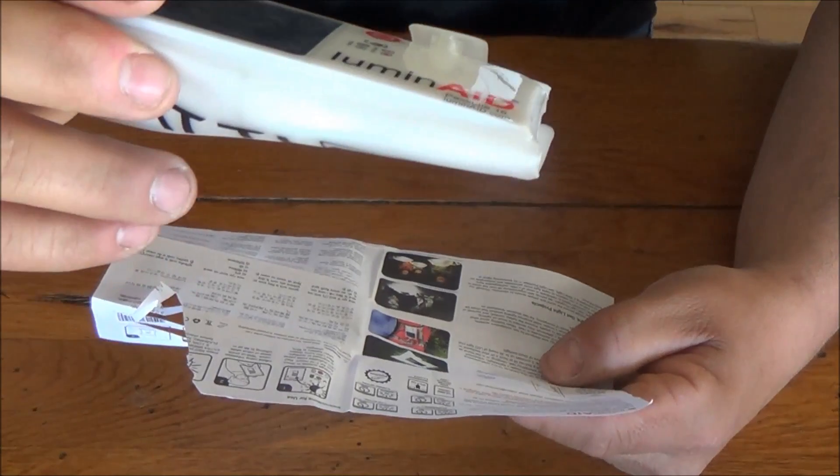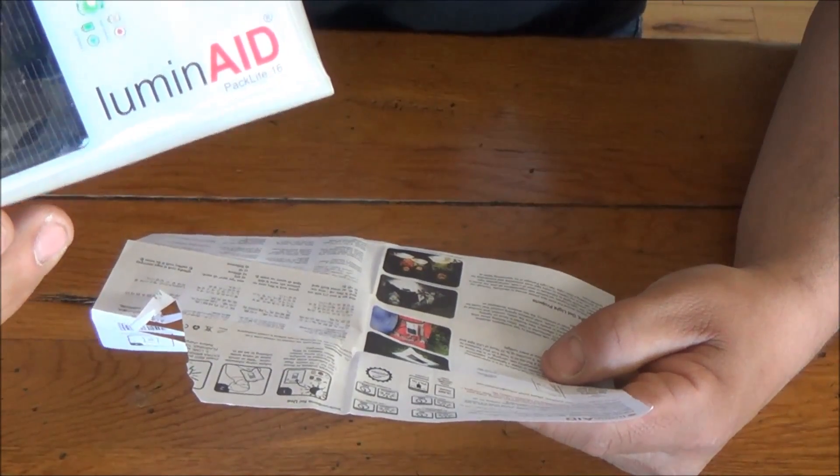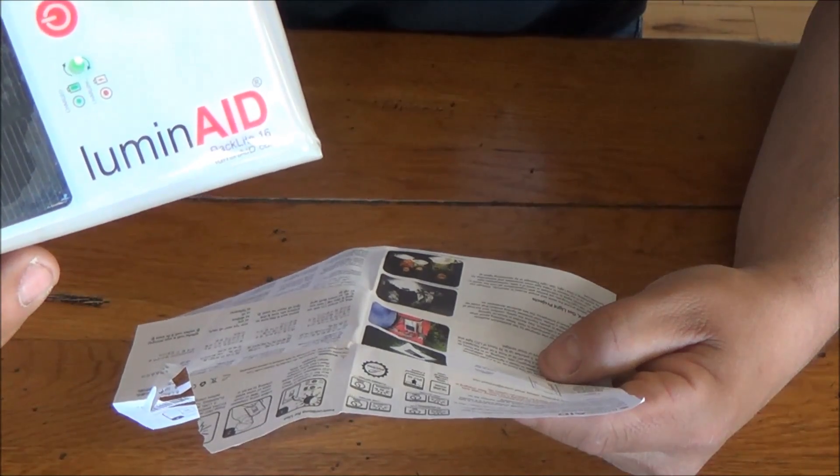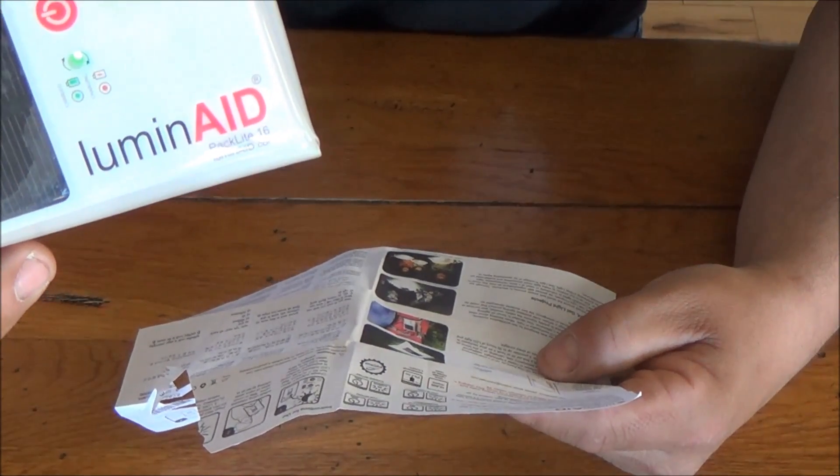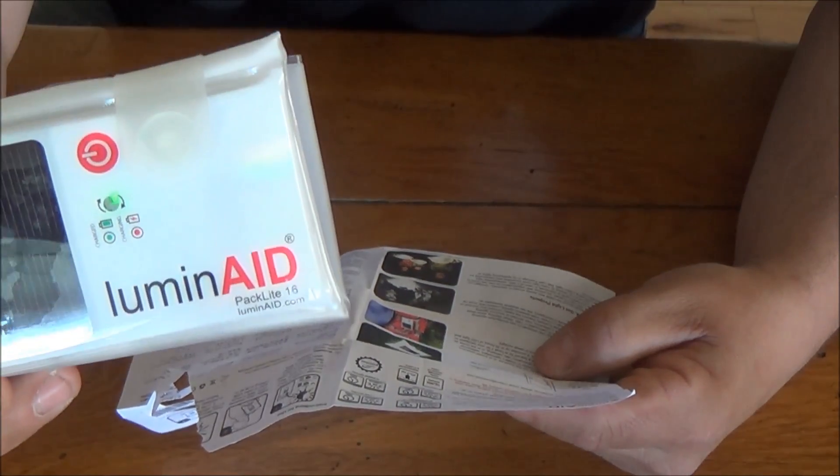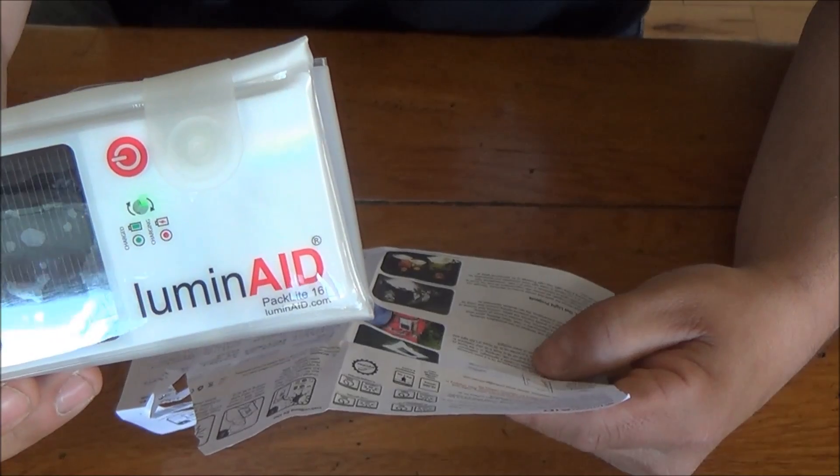Now this is a 65 lumen light which is supposed to run for about 6 hours on high. Then you got, oh sorry that's extra bright, then high is 35 and then low is 20 and then you have a flashing setting which is 20 lumens as well.